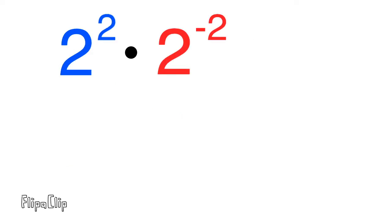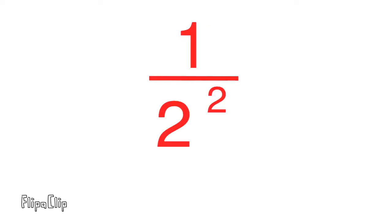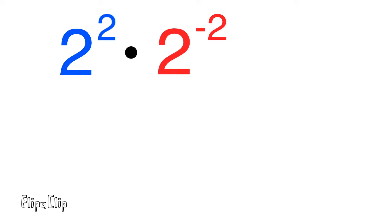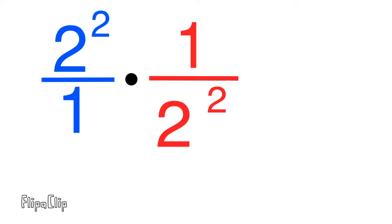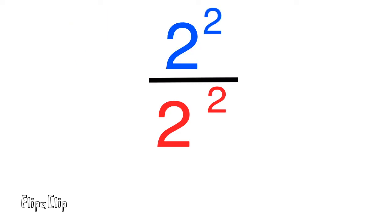Let's take another look at this expression: two to the power of two times two to the power of negative two. The blue term, two to the power of positive two, can be expressed as two to the power of two over one, and the red term, two to the power of negative two, can be expressed as one over two to the power of two. So the expression becomes two to the power of two over one times one over two to the power of two. When we multiply straight across we have two to the power of two over two to the power of two, and any number divided by itself is one.